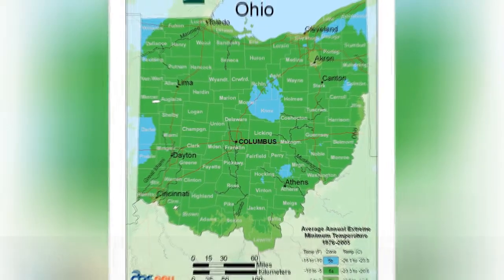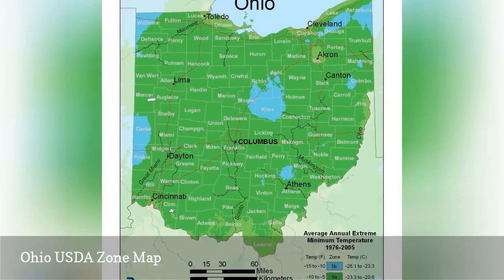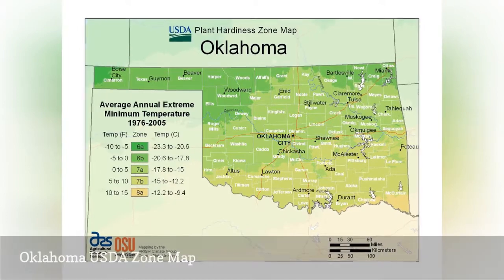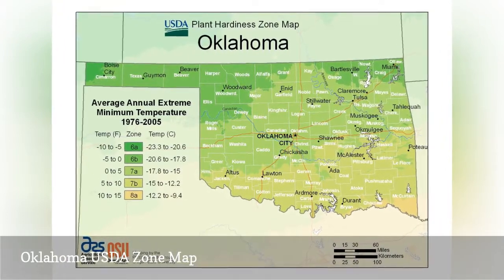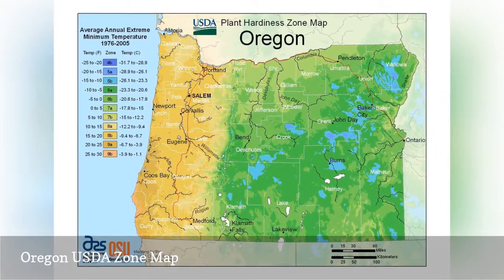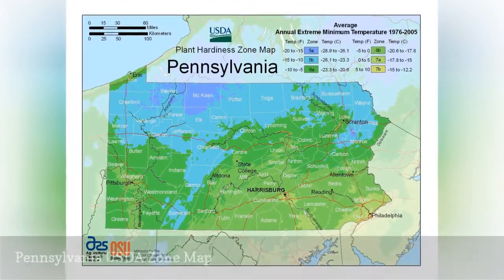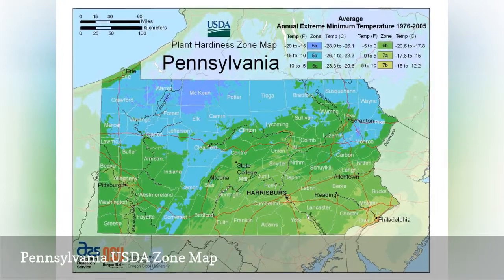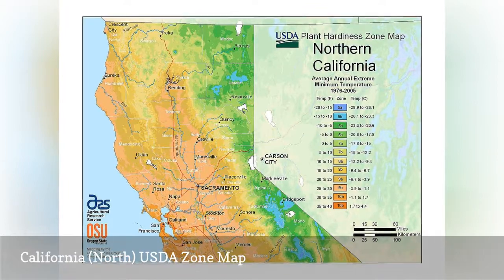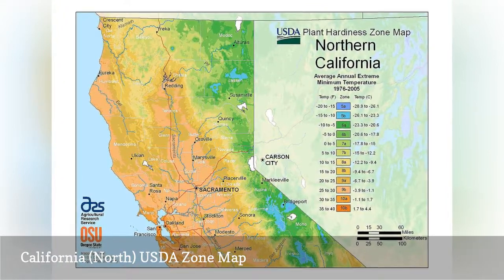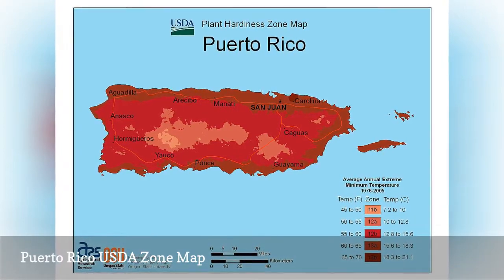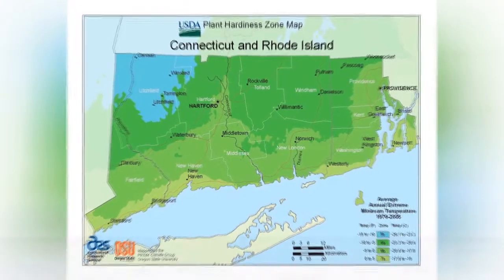USDA zones 5B through 6B are represented in Ohio. USDA zones 6A through 8A are represented in Oklahoma. USDA zones 4B through 9B are represented in Oregon. USDA zones 5A through 7B are represented in Pennsylvania. USDA zones 5A through 10B are represented in Northern California. USDA zones 11B through 13B are represented in Puerto Rico. USDA zones 5B through 7A are represented in Rhode Island.